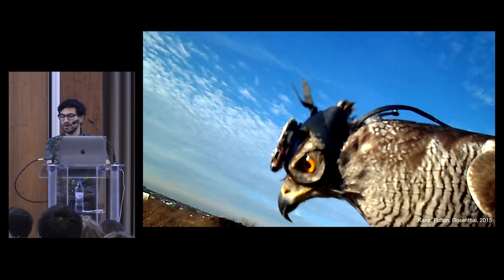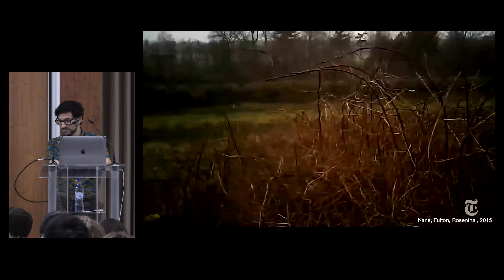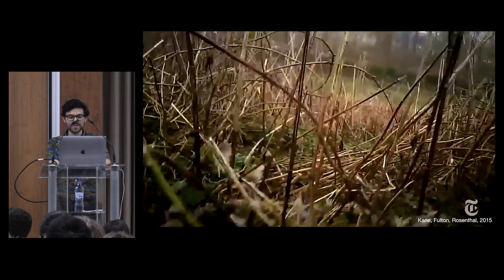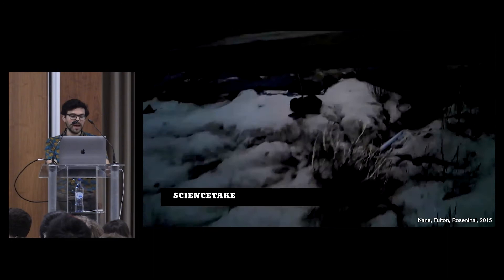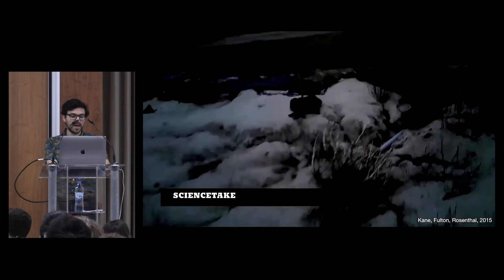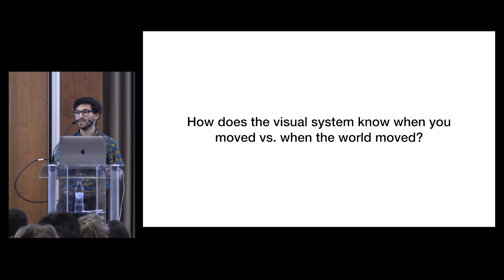And here's a video to illustrate this problem. This is a clip from the New York Times. It shows a video from a camera mounted on a hawk's head. As you can see, as the hawk moves its head, the visual scenery changes very quickly. But how does the hawk's visual system take these changes into account when actually processing the visual scene? So specifically this raises the question of how does the visual system know when you moved as opposed to when the world moved?